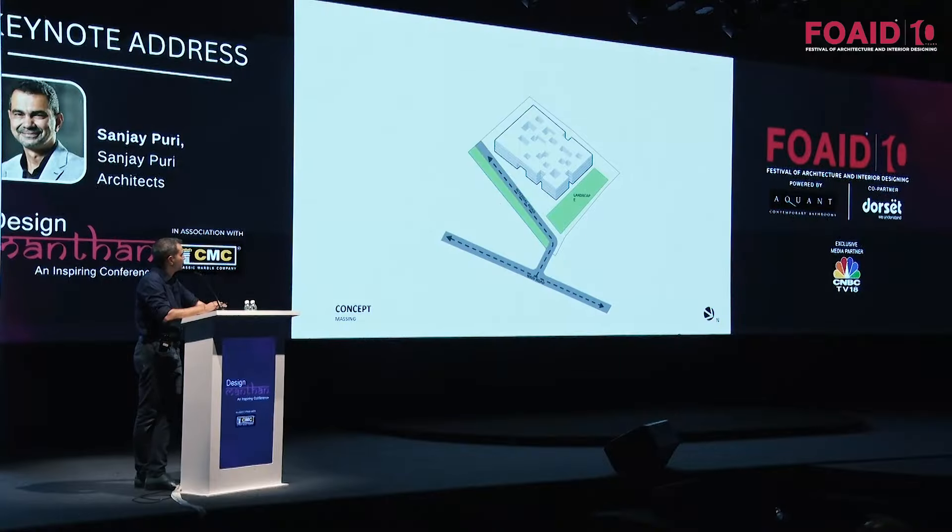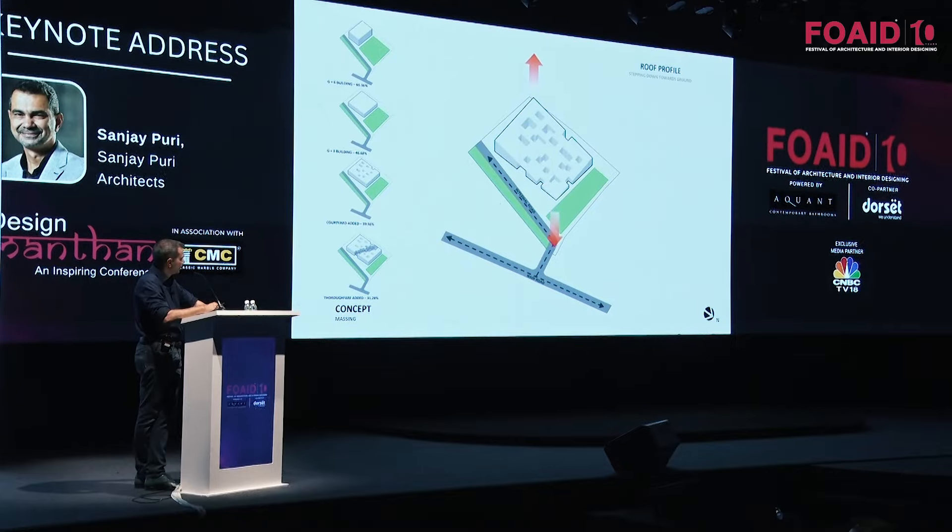Rather than straight-line circulation — the way most buildings are done — we took a cue from the way organic cities were planned and created interesting pathways that weave through the building. Because there was a future expansion planned diagonally, the entry starts from the center of the building and moves towards the side, giving access to where more classrooms will be built later. By doing all of this, the landscape kept getting reduced, so finally we tilted the building down at one corner and up at the other, increasing the landscape to 70% — more than what we started with trying to do a ground-plus-six building. So in a ground-plus-three building, we created more landscape space than a ground-plus-six.